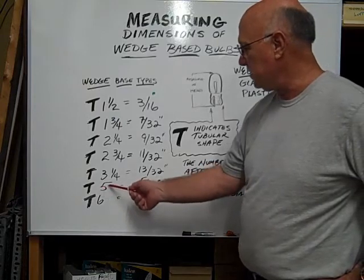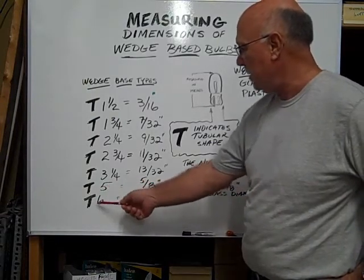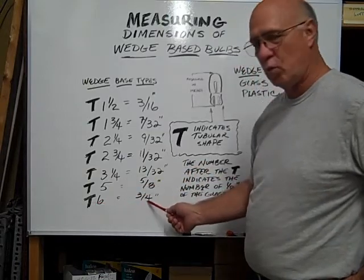As you see, that's a whole number so it's actually five eighths, so a T six would be three quarters of an inch.